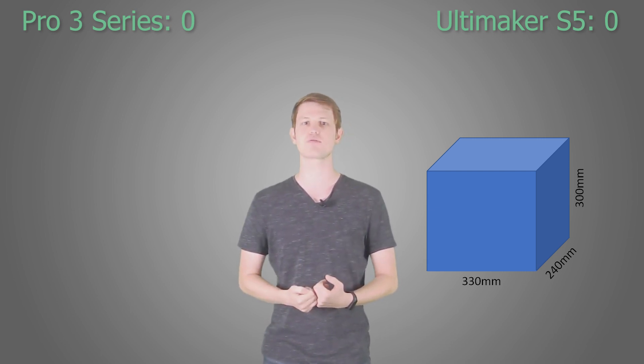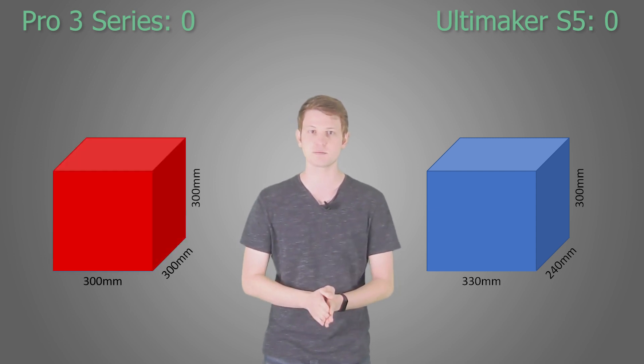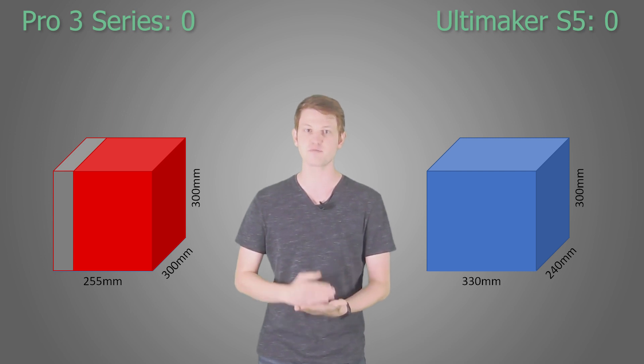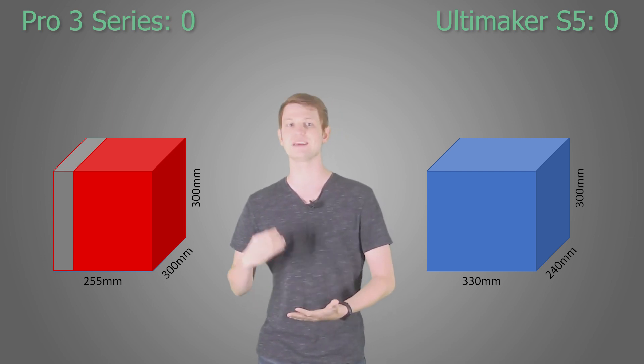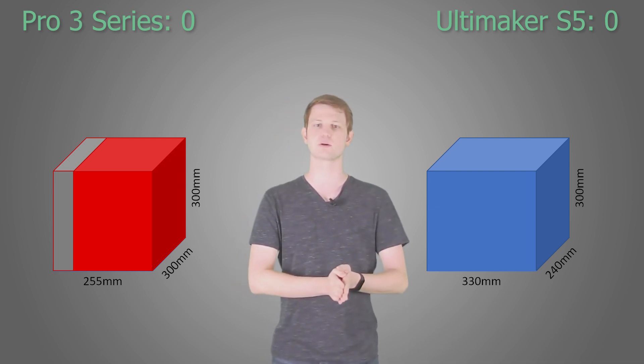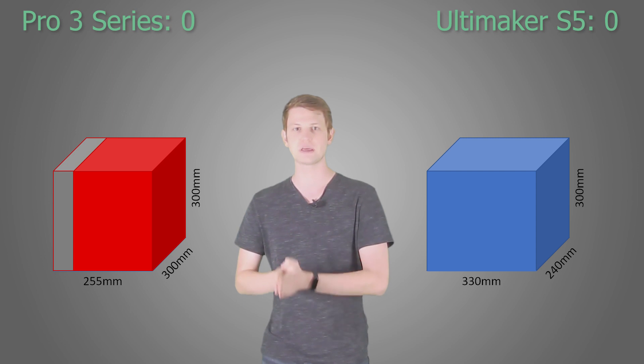The Race 3D Pro 3 base model has a build volume of 30 x 30 x 30 centimeters, totaling 27 liters in single extrusion mode, and 25.5 x 30 x 30 centimeters, totaling 22.9 liters in dual extrusion mode. So in single extrusion it has the Ultimaker beat, but in dual extrusion mode it loses out slightly.